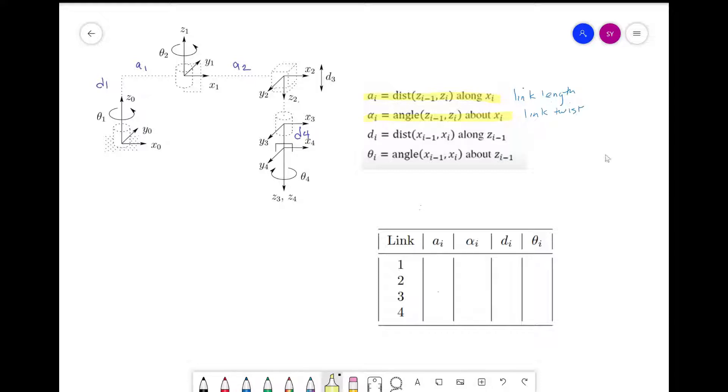Then we have d_i, the distance from x_{i-1} to x_i along z_{i-1}. This is also known as the link offset. Just a note that if the joint is prismatic, then d is variable.